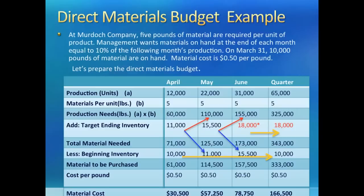We are not done yet because the company wants to keep a 10% raw material inventory at the end of each month. The red arrows show that ending inventory is 10% of the number in the next month's column. We can have the ending inventory for April and May using the arrows. But for June's ending inventory, we need to know July's production needs and take 10% of that in this column.